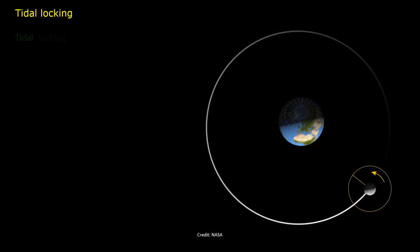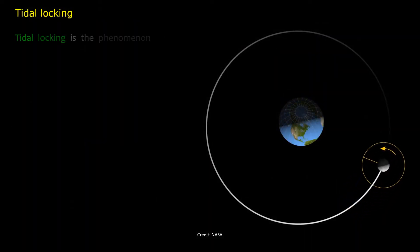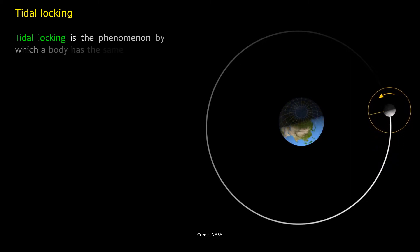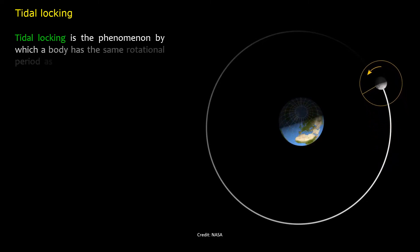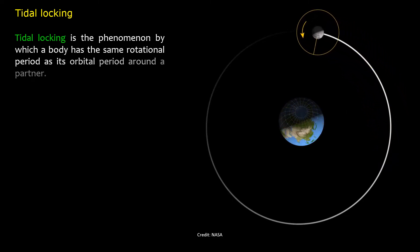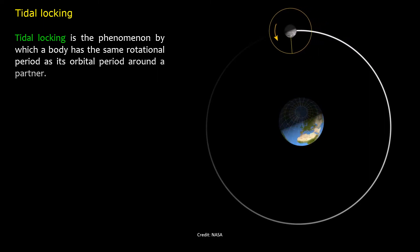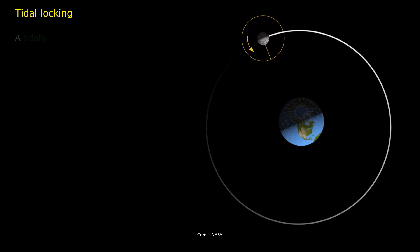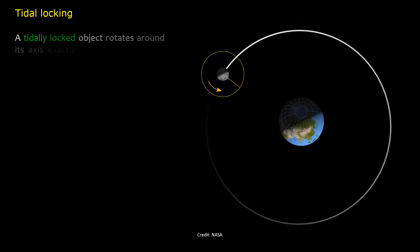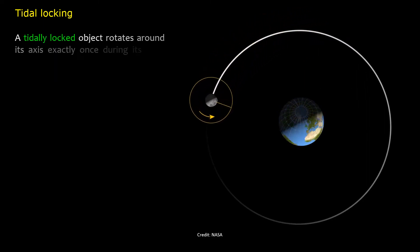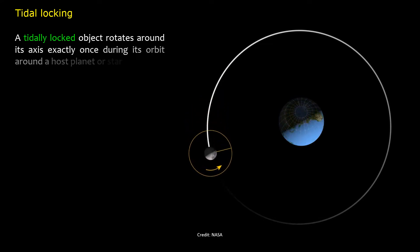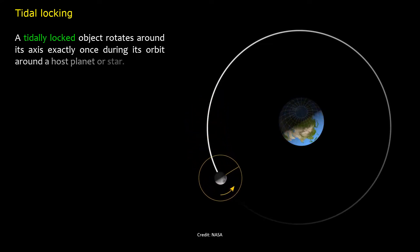Tidal locking is the phenomenon by which a body has the same rotational period as its orbital period around a partner. A tidally locked object rotates around its axis exactly once during its orbit around a host planet or star.